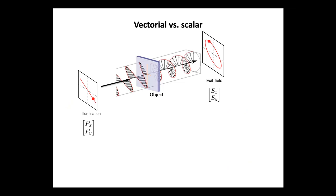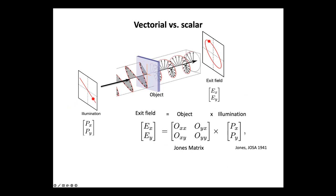When you have a polarized illumination, you describe it with a Jones vector. Here I choose a linear polarization. When this interacts with an object, in general the exit field could have a different state of polarization — here I put an elliptical polarization. To describe the properties of the object, since we have a multiplicative assumption, the object needs to be described by the so-called Jones matrix, which has four complex terms at every point. So the light is described by a vector with two quantities, whereas the object is defined by a matrix of four complex quantities.